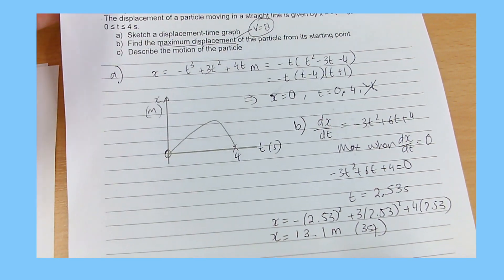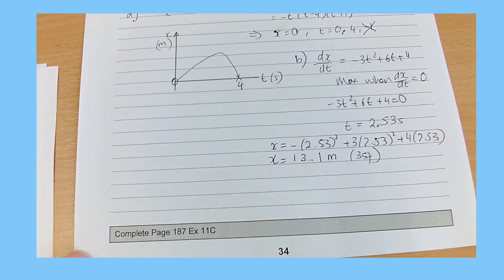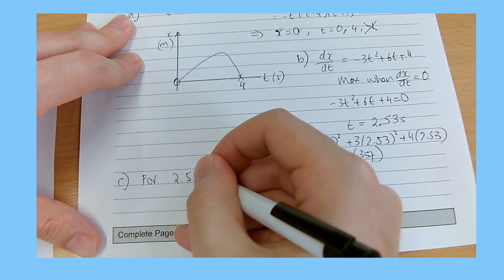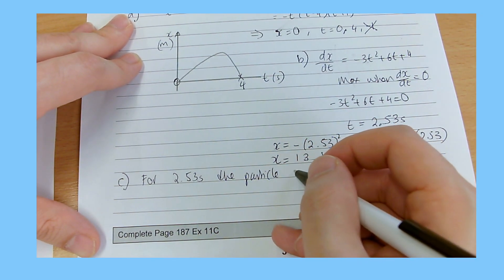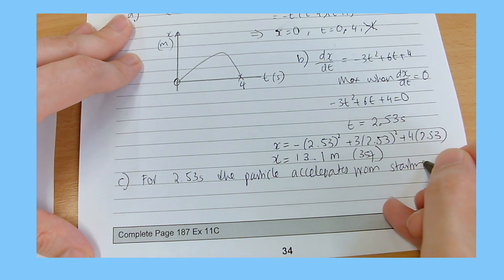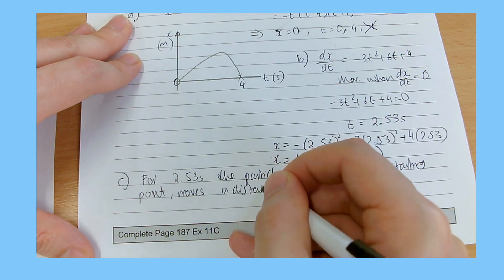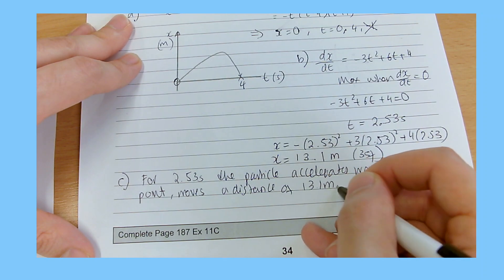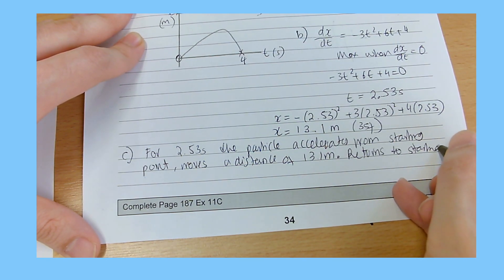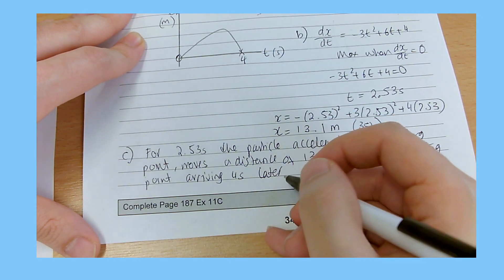This uses pure maths — differentiation to find stationary points, i.e., maximum displacement. To describe the motion: for the first 2.53 seconds the particle moves away from the starting point, travelling a maximum distance of 13.1 metres, then returns to the starting point, arriving 4 seconds after the start.